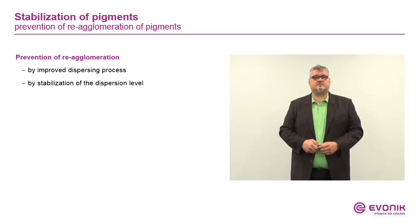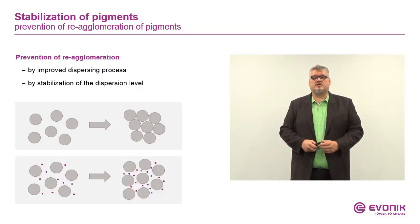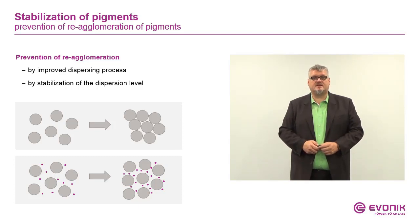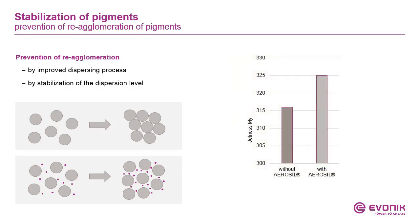The stabilization of pigments during storage is also demonstrated here. We disperse the pigments, and to hinder flocculation, Aerosil moves into the gaps between them and prevents the pigments from re-flocculating and building hard aggregates again. This can be described with the jetness factor — without Aerosil, the jetness of the coating is lower due to re-flocculation, while with Aerosil it is higher, as shown in this graph.